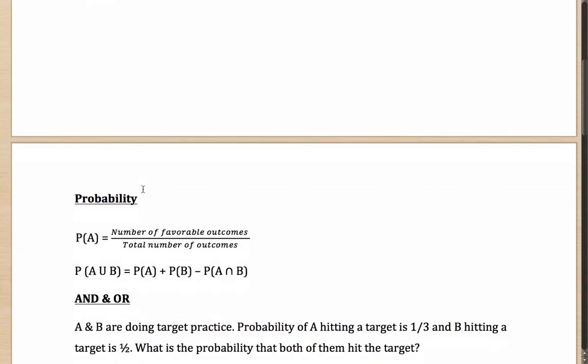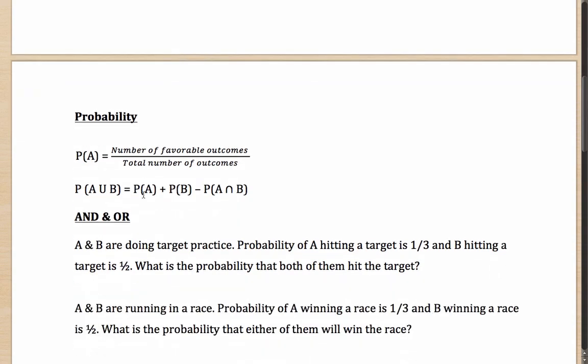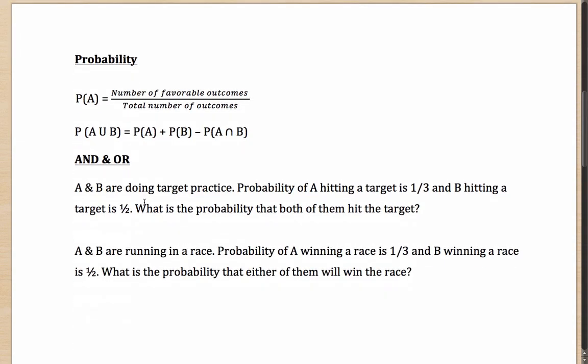To begin with, what exactly is probability? Probability of an event is defined as the number of favorable outcomes divided by the total number of outcomes. The point to note here is that the favorable outcomes and the total outcomes you are considering must be comparable — outcomes which are equally likely in nature.